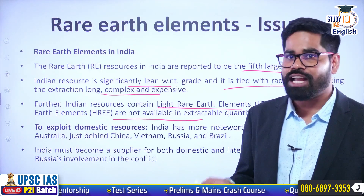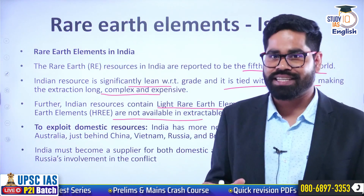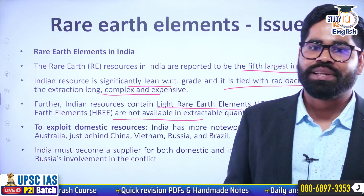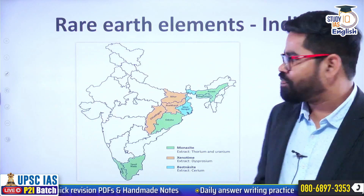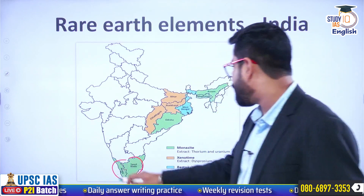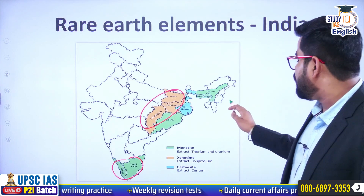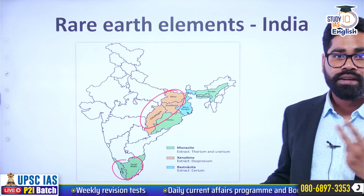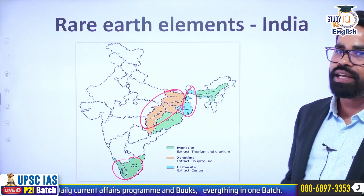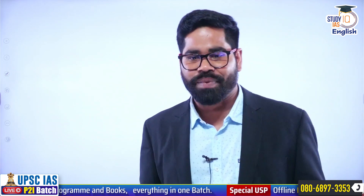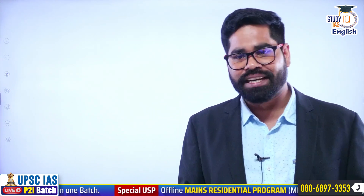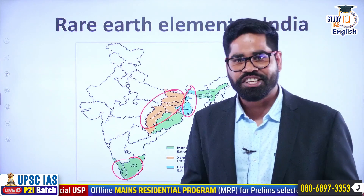The government has also notified some critical minerals — that is a separate list. Can you tell me how many critical minerals have been notified by the government? Tell me in the comment box. This map shows the regions where rare earth elements have been identified in India. We can see deposition of monazite here, and in certain regions there is deposition of xenotime and bastnäsite from where cerium can be extracted — this is found in the region of West Bengal. Thank you for watching, and do tell me the number of critical minerals notified by the government in India.